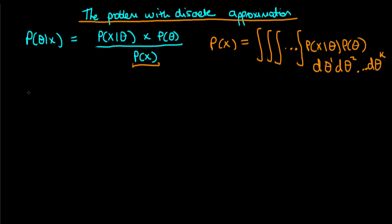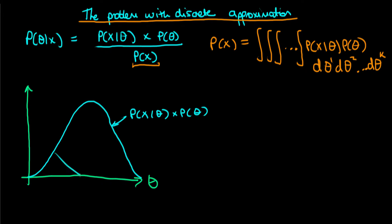One of the simplest techniques to work out multidimensional integrals, or to approximate them rather, is that of discretizing. So we imagine that we've got a single continuous parameter theta and we can draw what the product of the likelihood and the prior would look like. Let's imagine it looks something like this. So this blue curve here represents p of x given theta times p of theta.